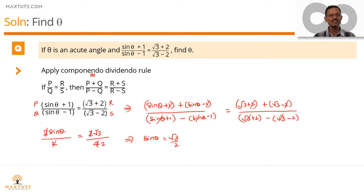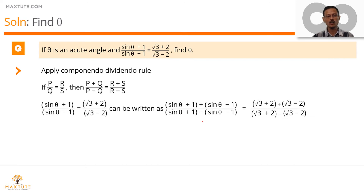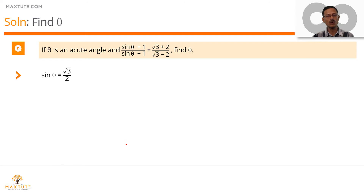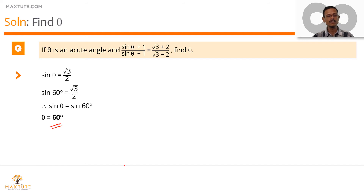sin θ = √3/2 — what angle in sin corresponds to √3/2? sin 60° = √3/2, so sin θ = sin 60°, which means θ = 60°. To summarize method one: applying Componendo Dividendo, cancelling the +1/−1, sin θ/−sin θ, and 2/−2 and √3/−√3 terms gives 2 sin θ / 2 on the LHS and 2√3 / 4 on the RHS, simplifying to sin θ = √3/2, so θ = 60 degrees. This is method one.